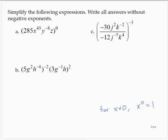So assuming x is not 0, y is not 0, and z is not 0, 285x to the 43rd y to the negative 8th times z, all raised to the 0 power, is 1.